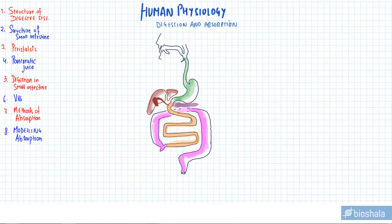Hello friends. This is Chapter 6 for IB Diploma Biology students — specifically 6.1, which has 8 different topics we are going to see one by one. Let's get started with topic number 1: the structure of the digestive system. In front of you is the most basic structure of the digestive system. We are going to go through each organ, what secretions come from it, and what it does.